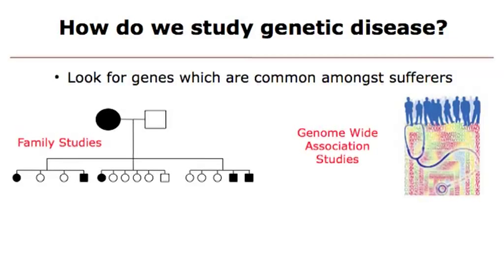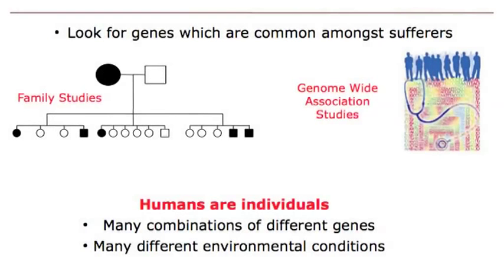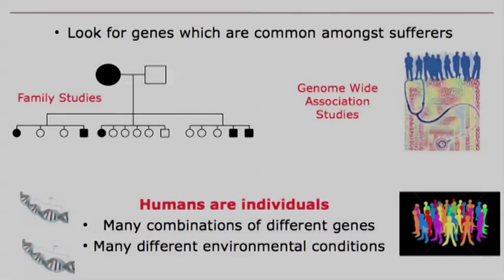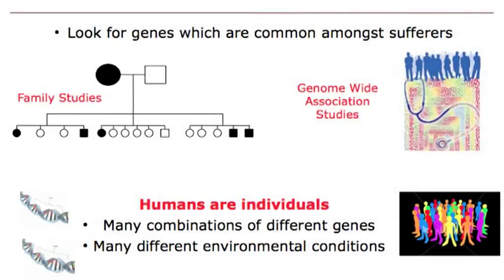Genome-wide association studies involve tens of thousands of humans recruited into mass studies to look for common genes in people susceptible to things like obesity and diabetes. One of the drawbacks of using humans in these massive genetic studies is that, as individuals, we are all combinations — a mass combination of many different genes. These different combinations make the analysis much more complicated. In studying human disease, we have a problem with just using the human gene pool because of these many different combinations and environmental effects.